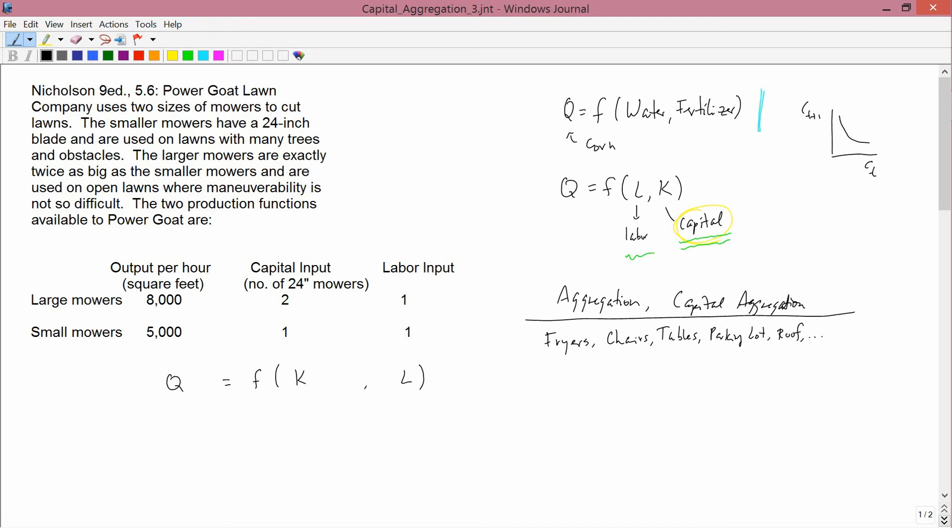the natural thing to do would be to say that the amount of capital is the price of the fryers times the number of fryers, plus the price of the chairs times the number of chairs, plus the price of the tables times the number of tables, plus the price of the parking lot times the number of parking lot, plus the price of the roof times the size of the roof, and so forth.